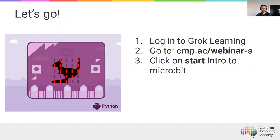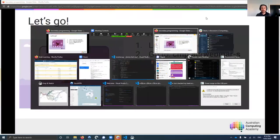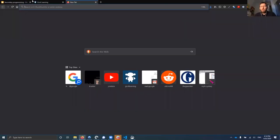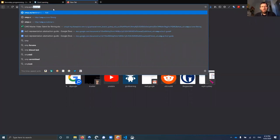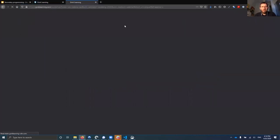The best way to demo this is on my screen, so everyone following along can follow. If you're following along at home, first log in to groklearning.com, and after you log in — emphasis on after you've logged in, because that's when the second link will work — just go to this URL: cmp.ac/webinar-S, where the S is for secondary. If you're watching this webinar at a later time, that workshop code will continue to work after the live version.